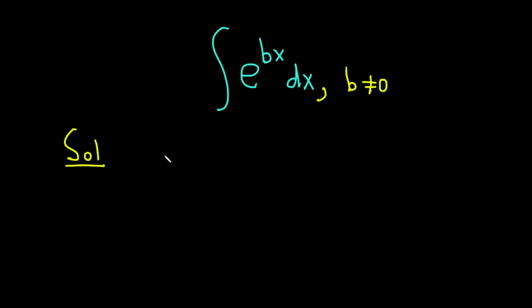So let's go ahead and work through it. Solution. Start by rewriting it. So we have the integral of e to the bx dx. To do this problem we start by making a substitution. We're going to let u be equal to bx.